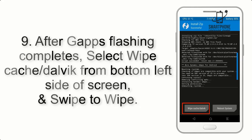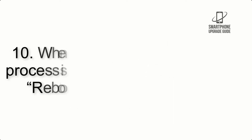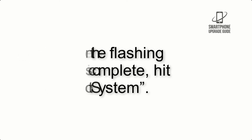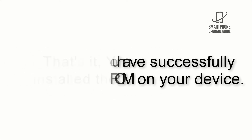Step 9: After GApps flashing completes, select Wipe Cache and Dalvik from the bottom left side of the screen and swipe to wipe. Step 10: When the flashing process is complete, hit Reboot System. That's it — you have successfully installed the ROM on your device.